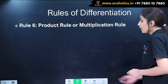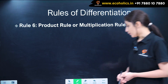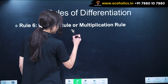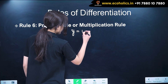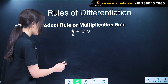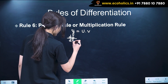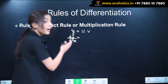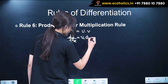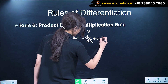Rule number 6: product rule, or multiplication rule of differentiation. If y is equal to u into v, where u and v are differentiable functions of x, then dy by dx is equal to u dv by dx plus v du by dx.